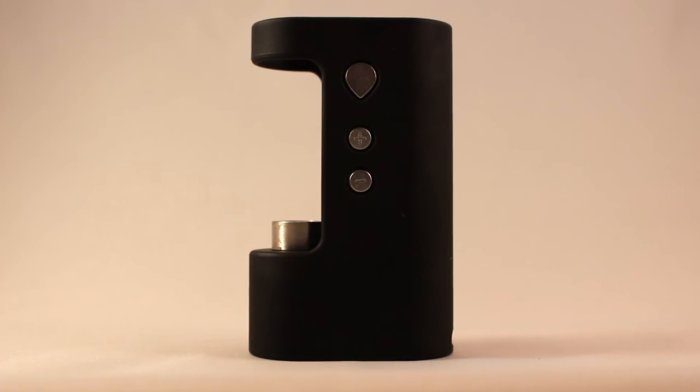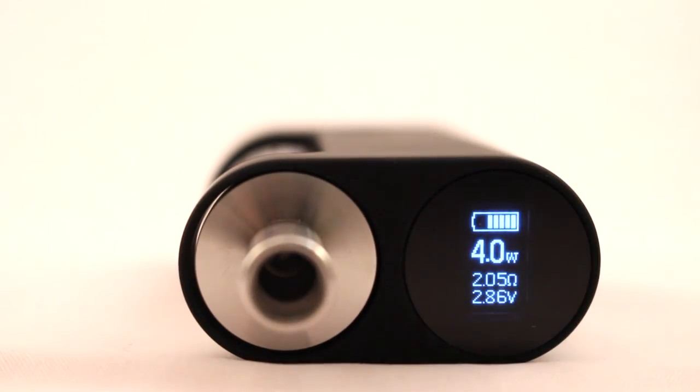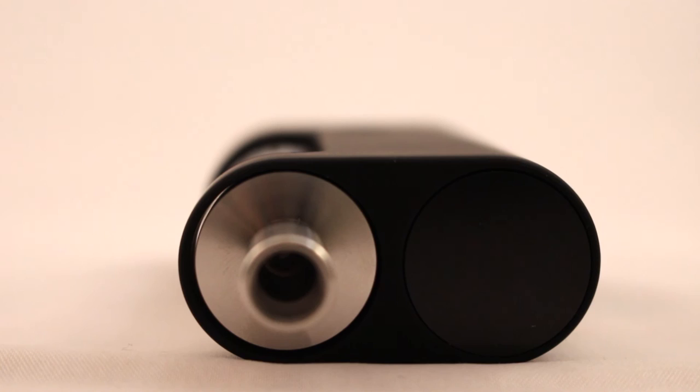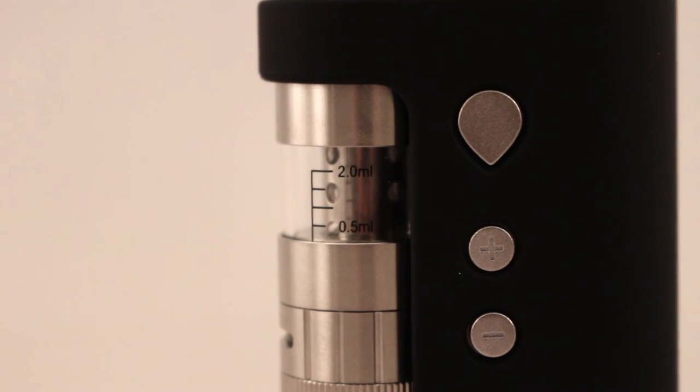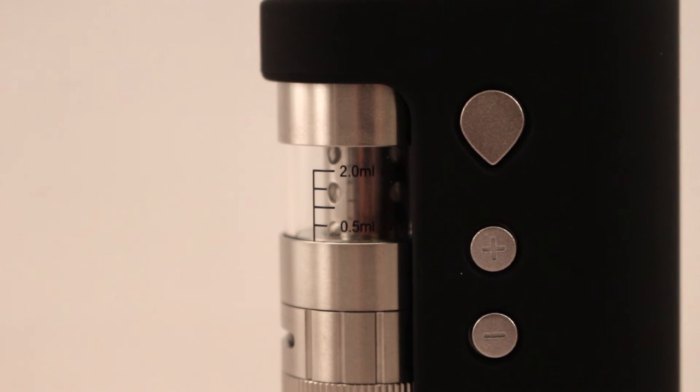But a big issue with the e-box is how delicate it is. Simply knocking the device over from its standing position is enough to break the LED screen on top of the battery. While the device will work fine without the screen, it's a shame that something that looks and feels so sturdy would break so easily.